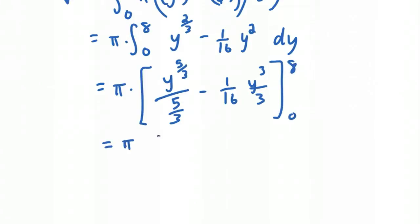We're going from zero to eight. Let's take this one step further. Three-fifths y to the five-thirds minus one over 48 y cubed, because we have a 16 and a 3 there. And go from zero to eight. If you plug those in, plug in the eight for y, and then plug in zero for y, and then subtract, and then all multiplying by pi here, what you end up with is...